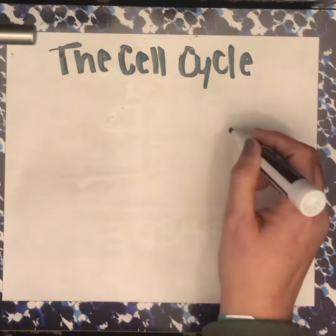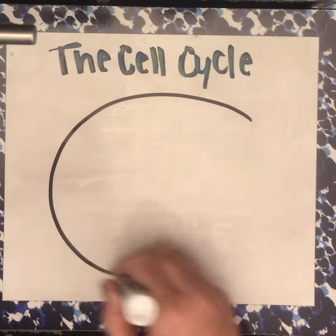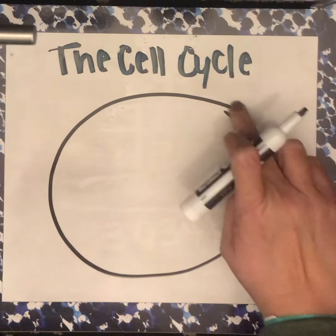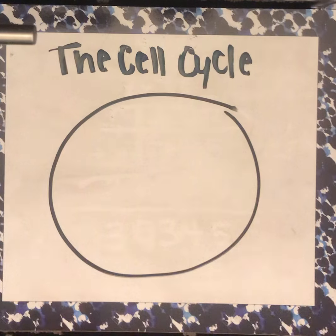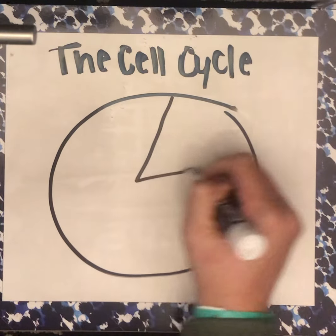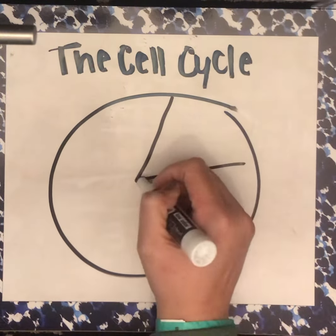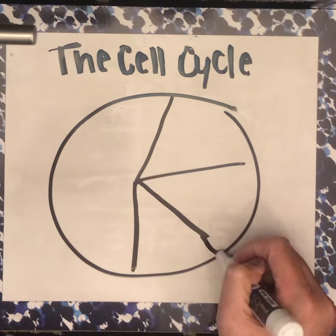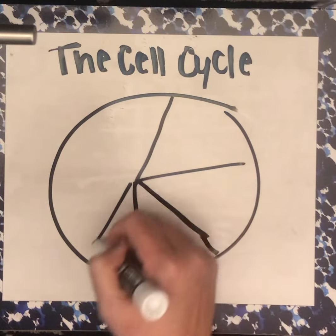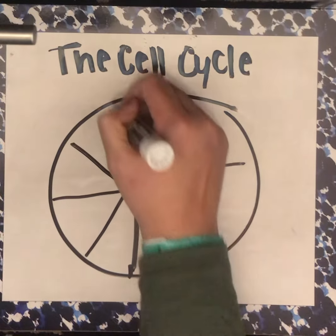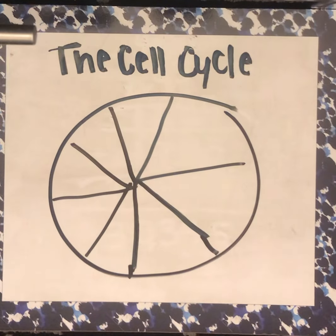So what I want you to do is write this into your notes. Go ahead and make a big circle — and hopefully yours is neater than mine. Let's break it up into sections. You're going to need three big sections and then five smaller sections.